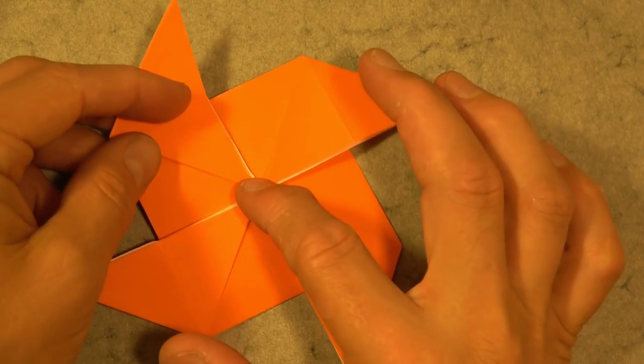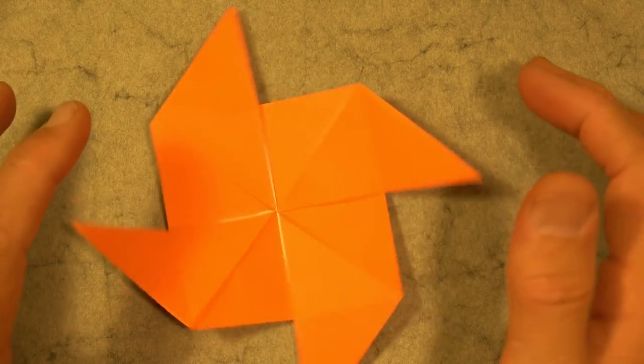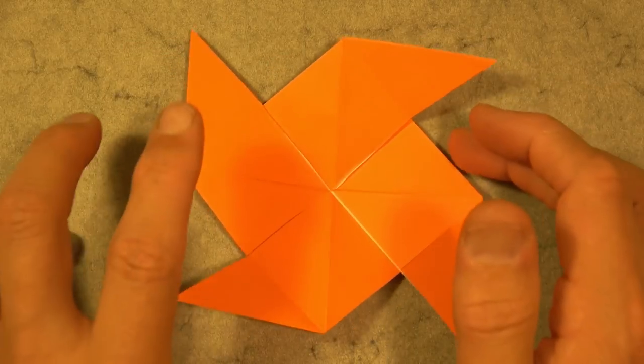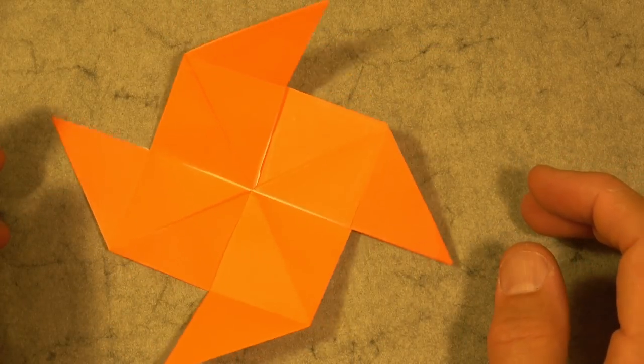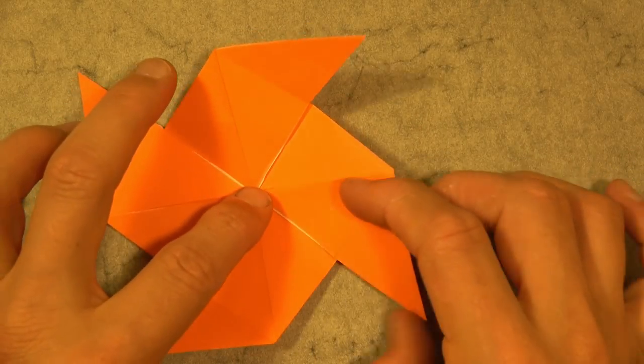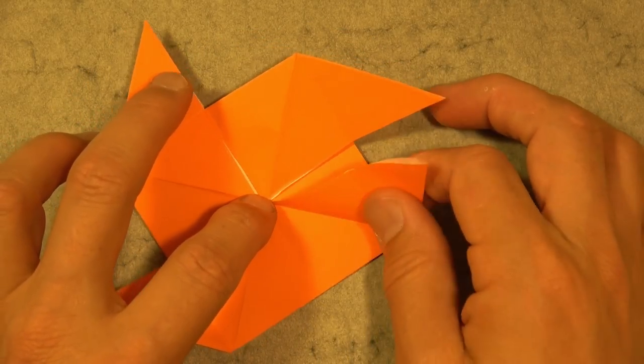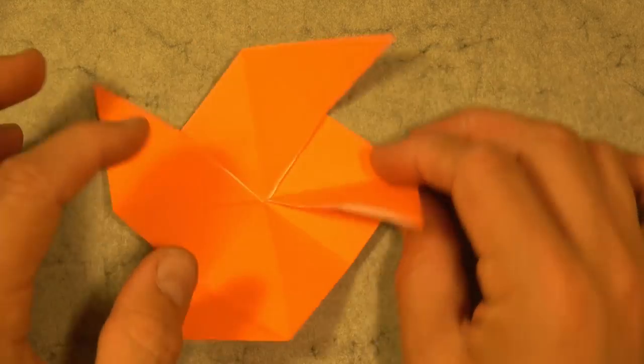And poke this middle point in. So this way you can see it spins nicely. And it spins nicely. Just like this. And in order to get it so that it'll spin while you blow on it, you just need to lift these flaps up.